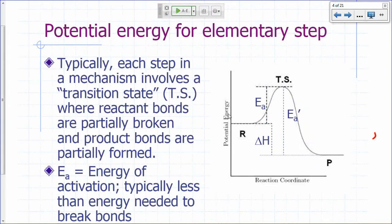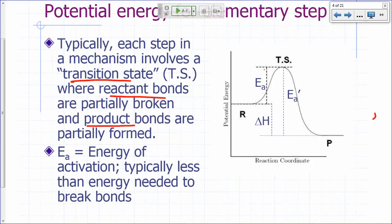So typically, a mechanism will involve a transition state where your reactant bonds are partially broken and product bonds are partially formed. The energy of activation that we have here, which we are showing here, will typically be less than the energy needed to break the bonds.